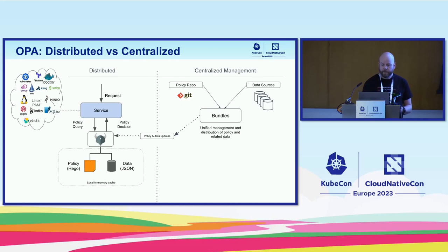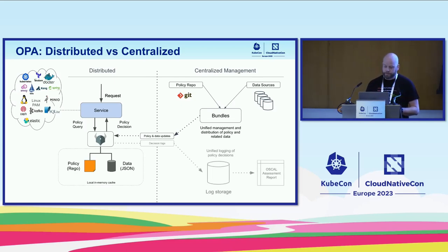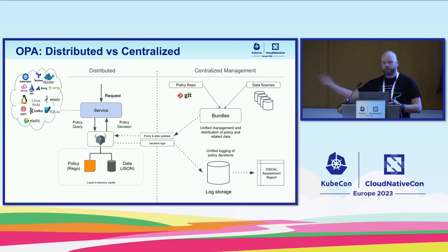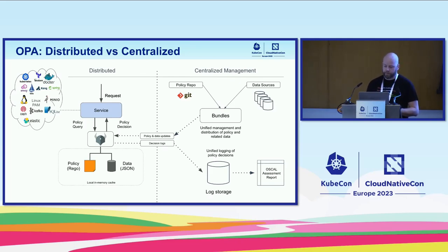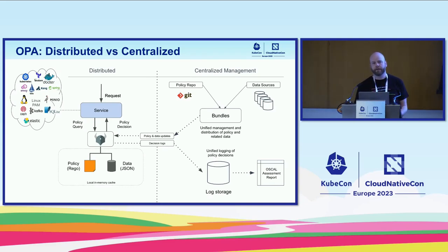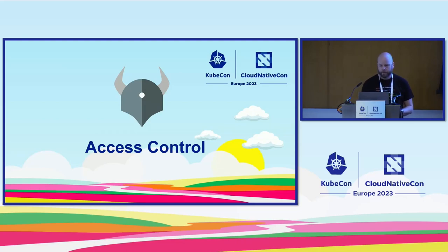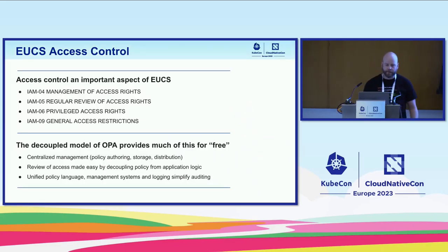As OPA pulls down bundles, it emits decisions. We want those in a centralized location under our control. Those decisions can then be used for things like creating an OSCAL assessment report — another interesting use case. Access control is another big use case for OPA — probably about 50/50 split with infrastructure use cases — and it's an important part of the EUCS as well.